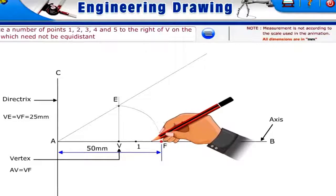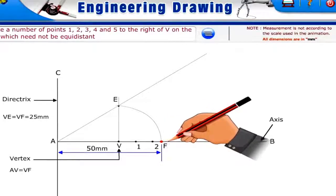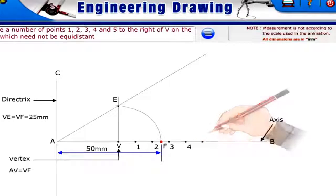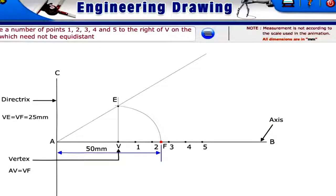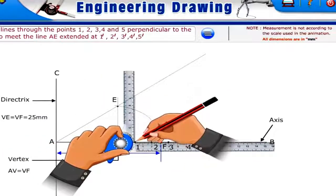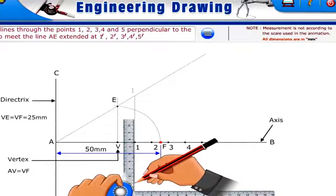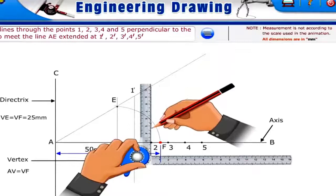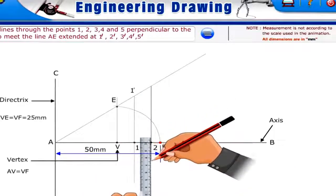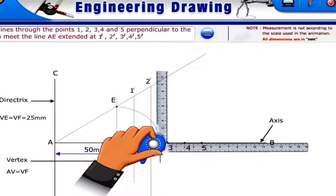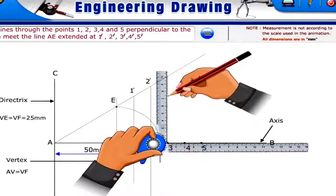Locate points 1, 2, 3, 4, and 5 to the right of V on the axis, which need not be equidistant. Through points 1, 2, 3, 4, and 5 draw lines perpendicular to the axis to meet the line AE extended at points 1', 2', 3', 4', and 5'.